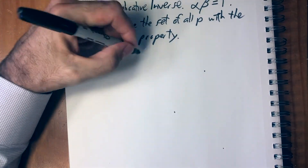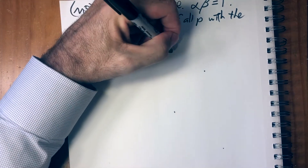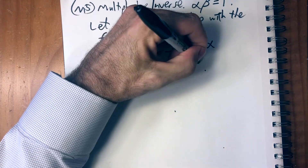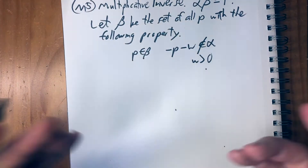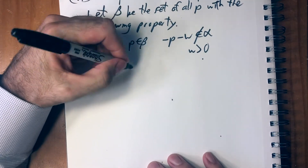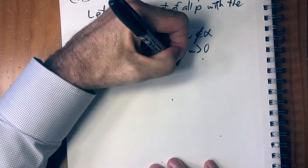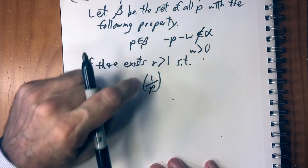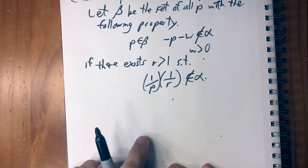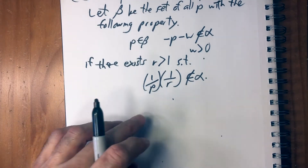With addition, the definition was that p is an element of beta if minus p minus w was not an element of alpha for some w greater than zero. We have to make a similar definition using multiplication, so instead of minus we're using the inverse. The property is that p is an element of beta if there exists an r greater than one such that one over p times one over r is not an element of alpha. In other words, there's some rational number smaller than p that's still not in alpha, then p is in beta.